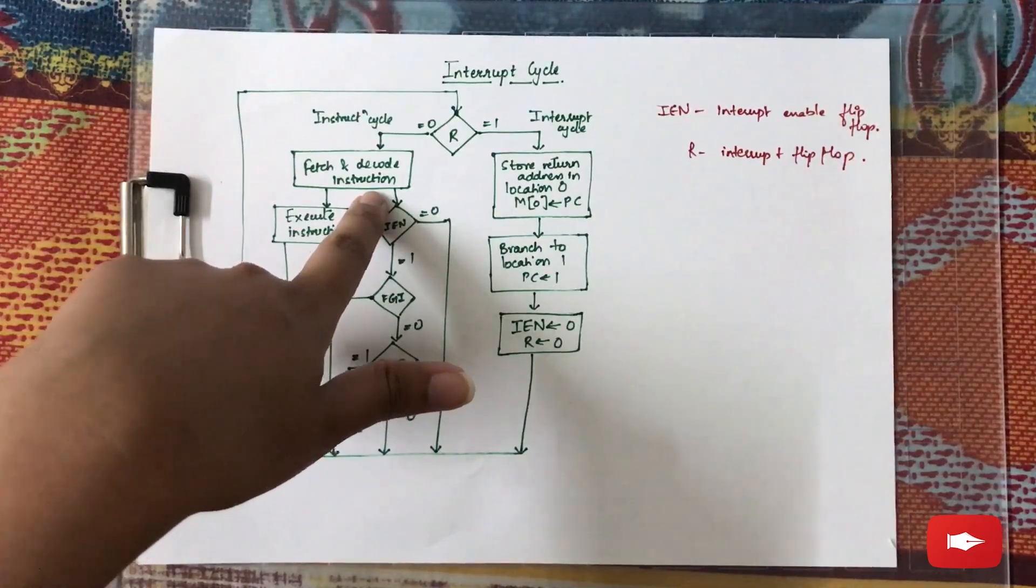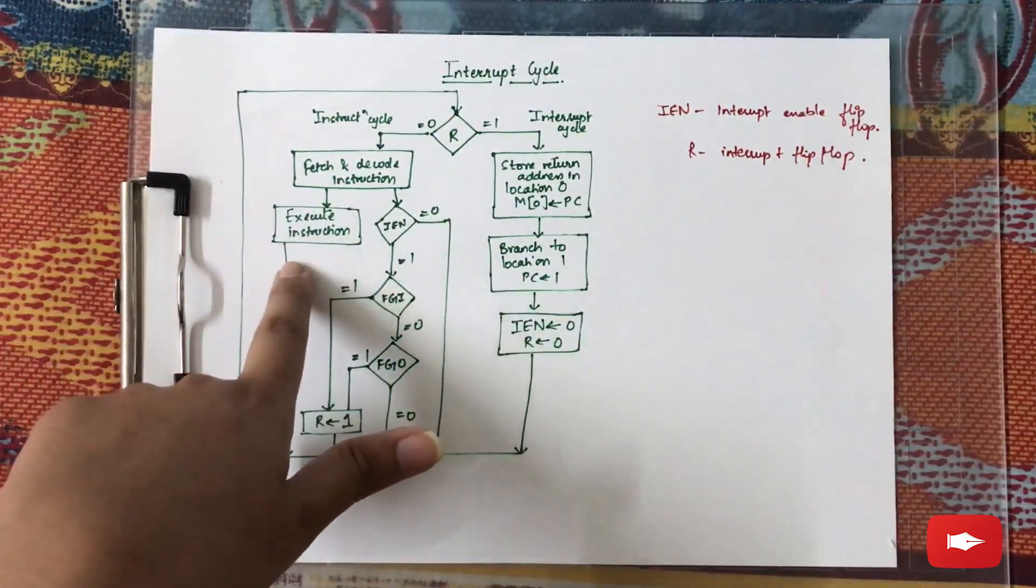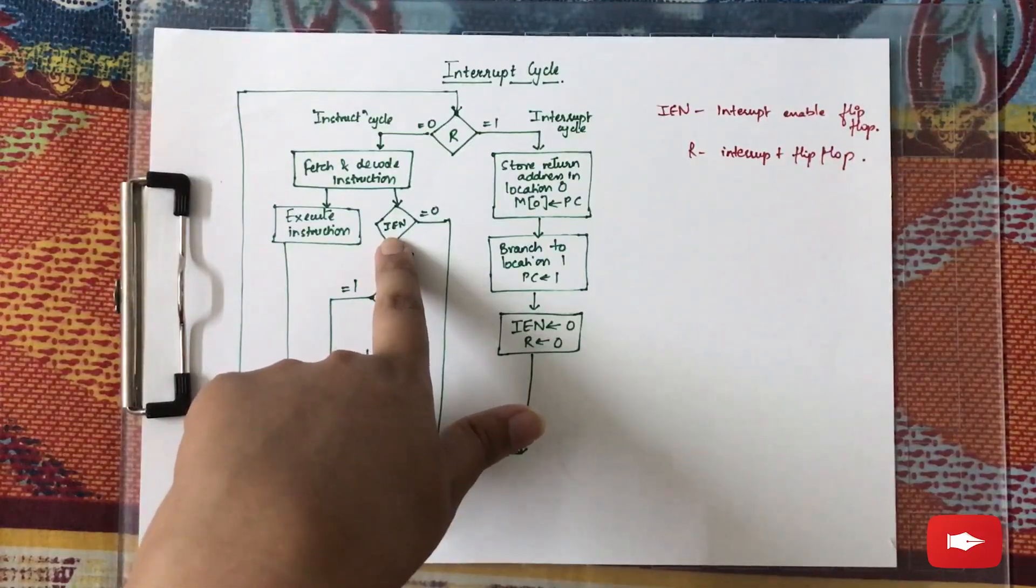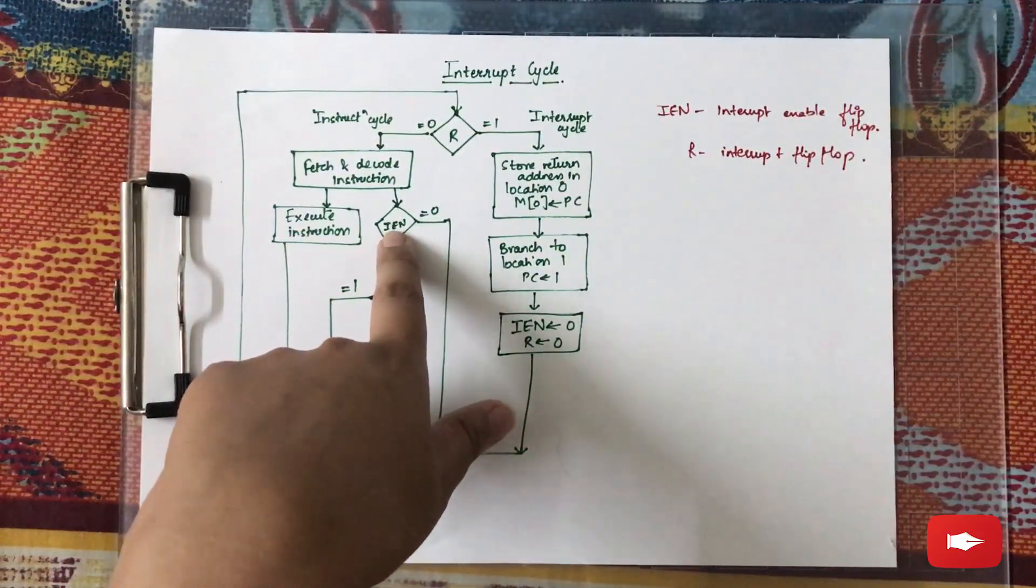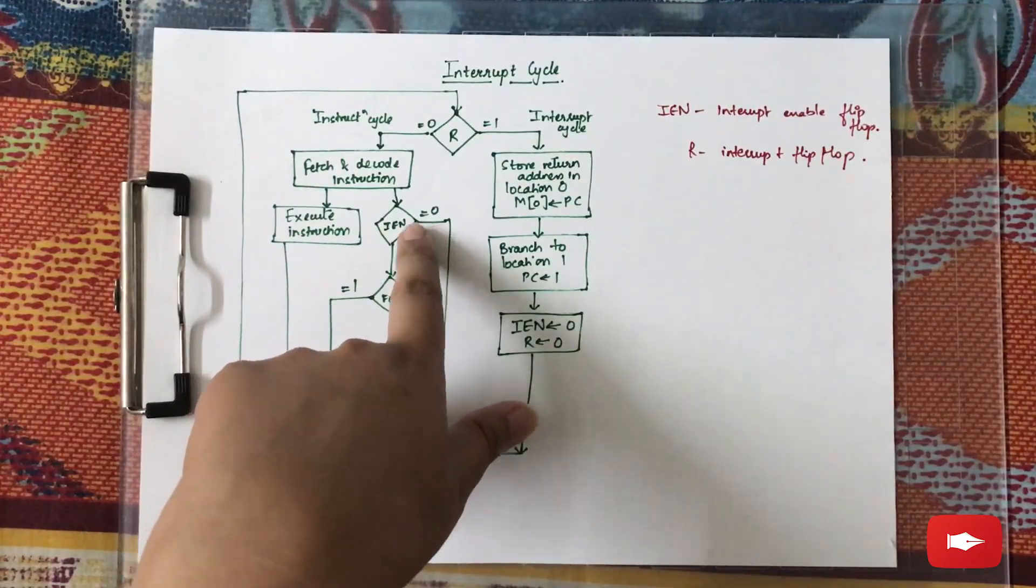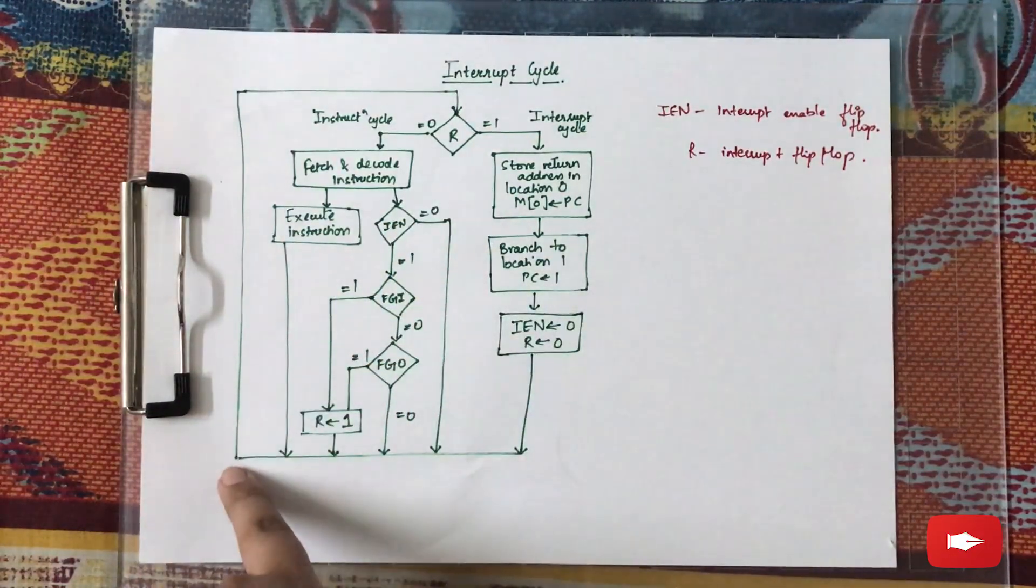Now during the execution phase, there is another flip-flop, that is IEN. It stands for interrupt enable flip-flop. Its value is checked. If it is zero, that means there is no interrupt and the next instruction is executed.